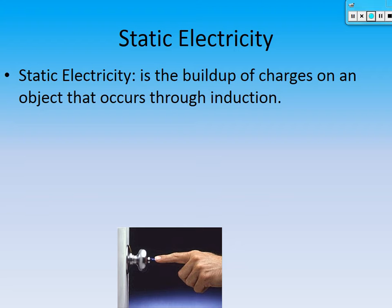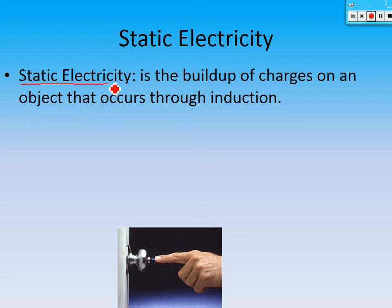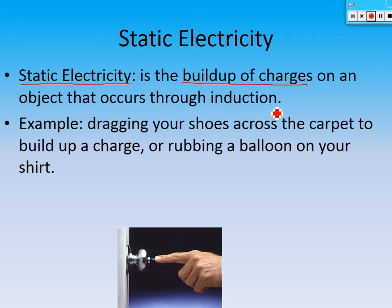Static electricity: you're supposed to write down the definition. Static electricity is the buildup of charges on an object that occurs through induction. Some examples: dragging your shoes across the carpet, or rubbing a balloon on your shirt so you can stick it on the wall — we've all seen how that works.